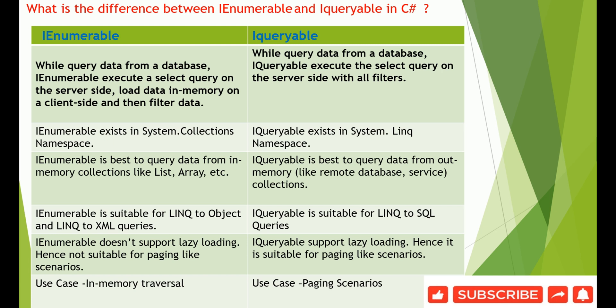IEnumerable is an in-memory operation. When querying data from a database, IEnumerable executes a select query on the server side, loads all the data into memory on the client side, and then filters it. IQueryable, on the other hand, executes the select query on the server side with all the filters applied on the database side.